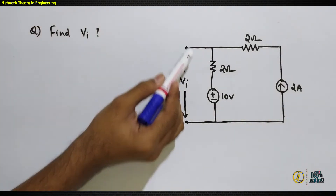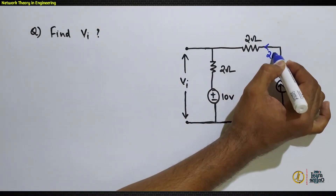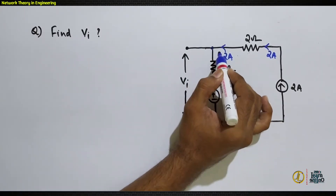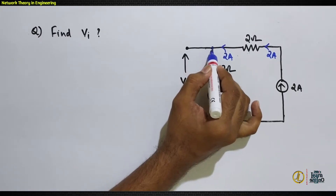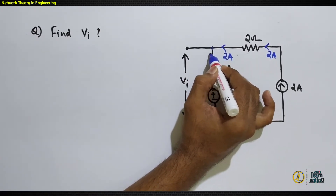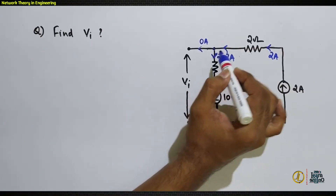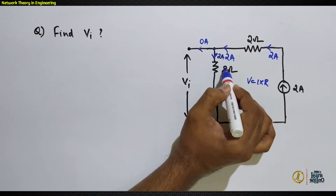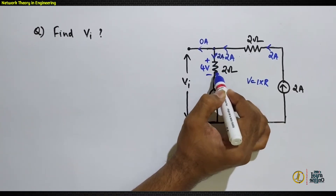The next question: a voltage vi appears across two points and we need to find its value. First, mark the known branch currents and voltages. A 2A current flows through the 2-ohm resistor. At the junction, there are two paths but one is open-circuited, so the entire 2A flows through the second path. With 2A through 2Ω, the voltage drop is v = i × r = 4V.